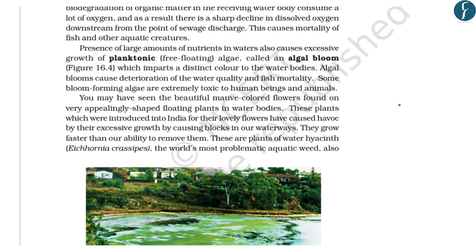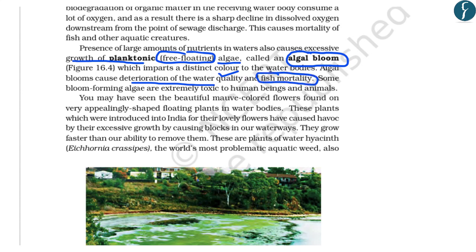As nutrient discharge increases into water bodies — nutrients like nitrates and phosphates — it leads to increased growth of planktonic algae, which are free-floating in nature. This phenomenon is known as algal bloom. It makes water bodies colored, is related to deterioration of water quality and high fish mortality, and some of these algaes are also toxic to human beings and other animals.